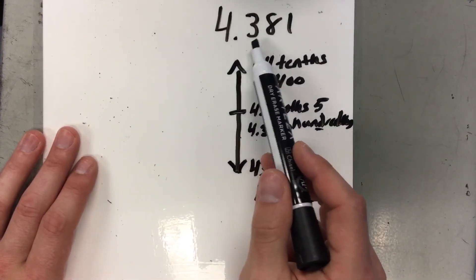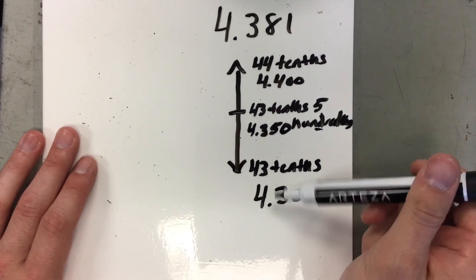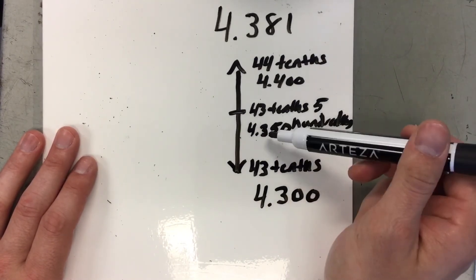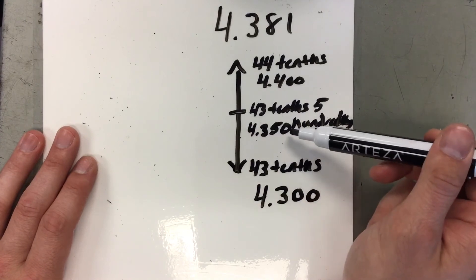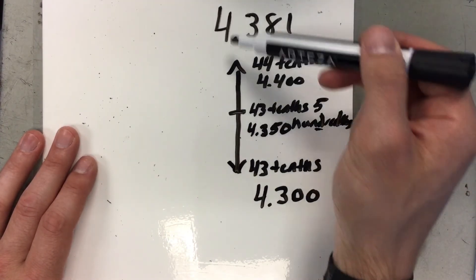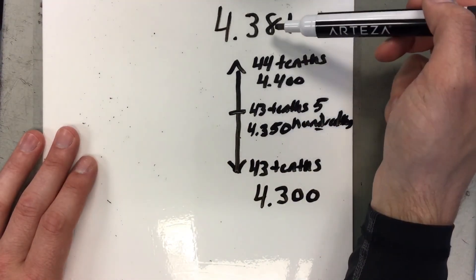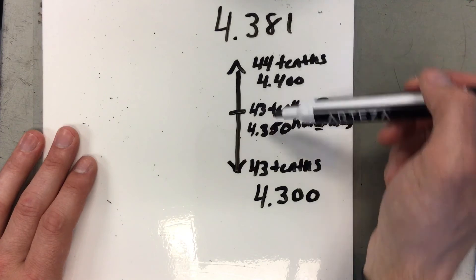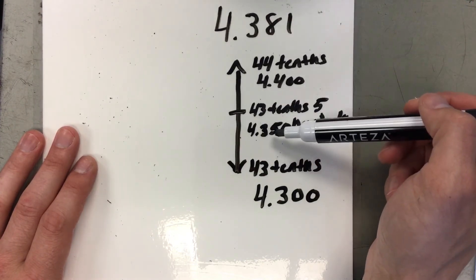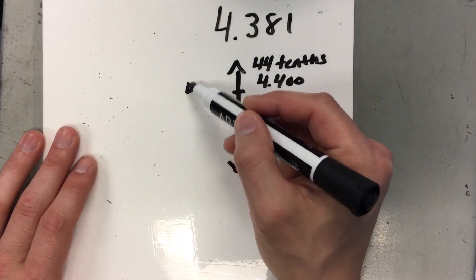Now, let's look at this 4.381. Would it lie, if I'm looking at my midpoint, is it bigger than 4.350 or is it smaller than that? Well, let's compare. They both have a 4 in the ones, a 3 in the tenths, 8 in the hundredths here, and a 5 in the hundredths here. So I know my number is a little bit bigger than the midpoint.